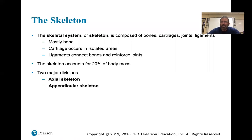The skeletal system is composed of bones, cartilage, joints, and ligaments. Cartilage, like in the temporal mandibular joint, provides a smooth surface for articulation so joints can glide. Remember: ligaments join bone to bone, tendons join muscle to bone.